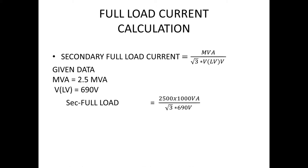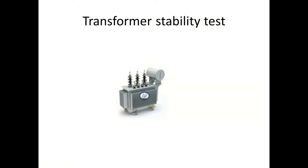Now we have the full load current. We will use the current injection kit to perform the test. As we go into the current injection kit, it integrates an initial 800 V supply, so the primary side voltage is 8.63 V.